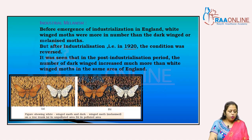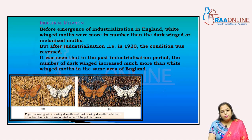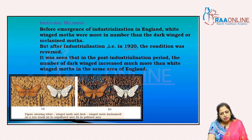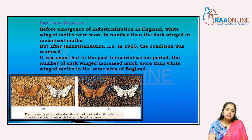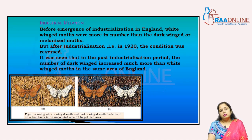Black-winged moths got saved by predators, but white-winged moths were seen clearly. After industrialization, the number of white-winged moths decreased compared to black-winged moths.